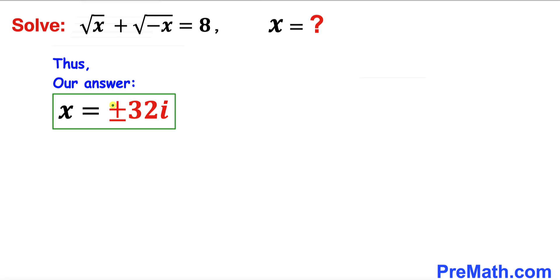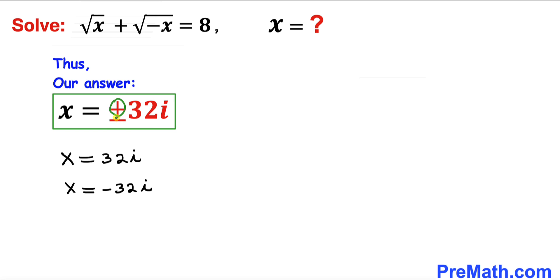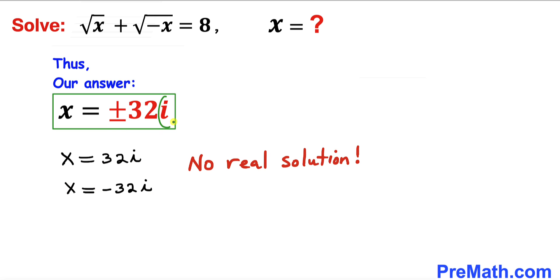Therefore our right hand side is going to become positive or negative square root of 1024, which is 32, times i. So that's our solution: x turns out to be equal to positive or negative 32 times i. Splitting the signs, we have two solutions: x equals 32i and x equals negative 32i. And since we are dealing with imaginary numbers, no real solution exists. Thanks for watching and please don't forget to subscribe to my channel for more exciting videos.